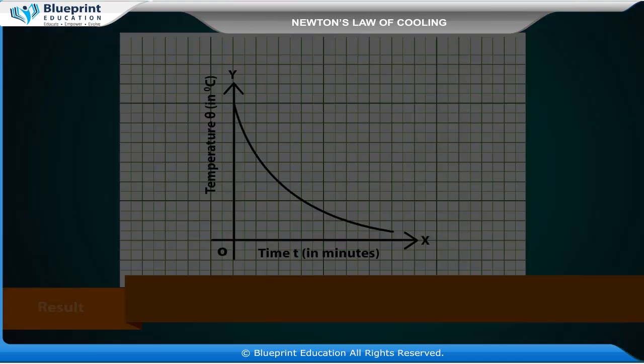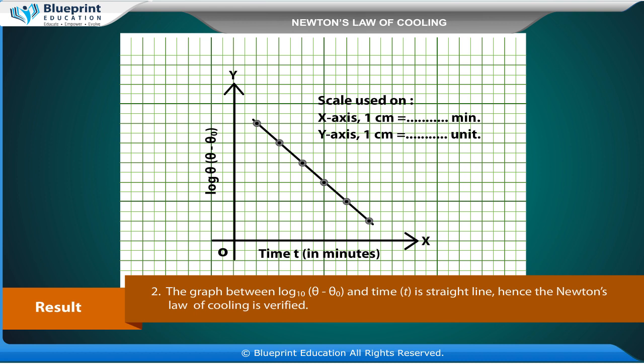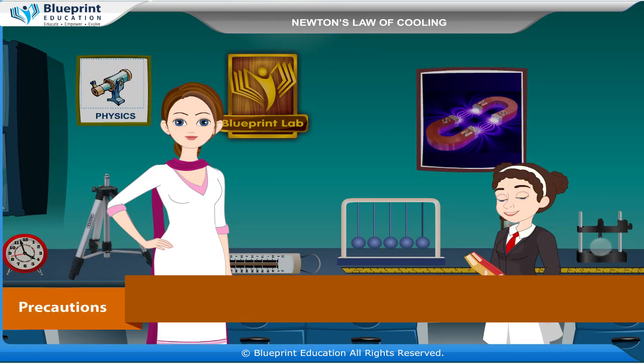Result: The temperature falls quickly in the beginning and then slowly, as the difference of temperature between the body and its surroundings goes on decreasing. This is in agreement with Newton's law of cooling. The graph between log₁₀(θ − θ₀) and time T is a straight line. Hence, Newton's law of cooling is verified.